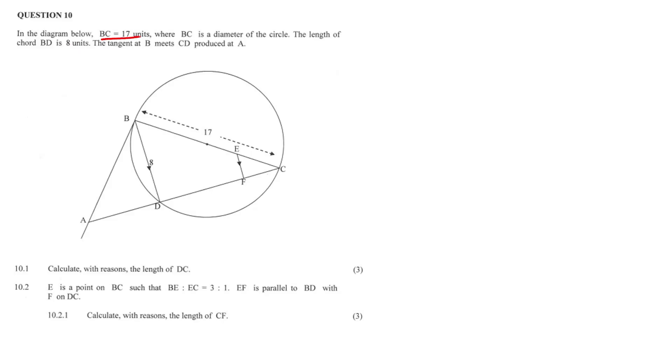In the diagram below, BC is equal to 17 units, where BC is a diameter of the circle, and the length of chord BD is 8 units. The tangent at B meets CD produced at A. So we've got our triangle here, we've got a circle. Question 10.1: calculate with reasons the length of DC. How are we going to do this? The length of DC. So straight off the bat, BDC, we've got a triangle here, we've got a diameter.